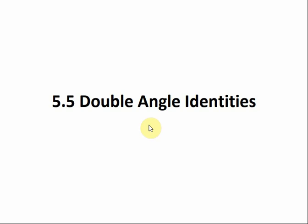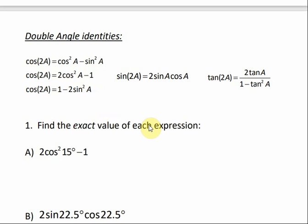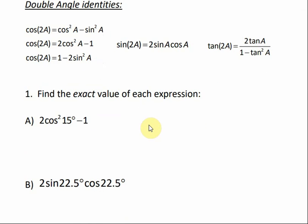Section 5.5: Double angle identities. We have some double angle identities for cosine, sine, and tangent. If you'll notice, they're all listed here. For cosine, we have three different double angle identities that we can use. There's only one for sine and one for tangent.